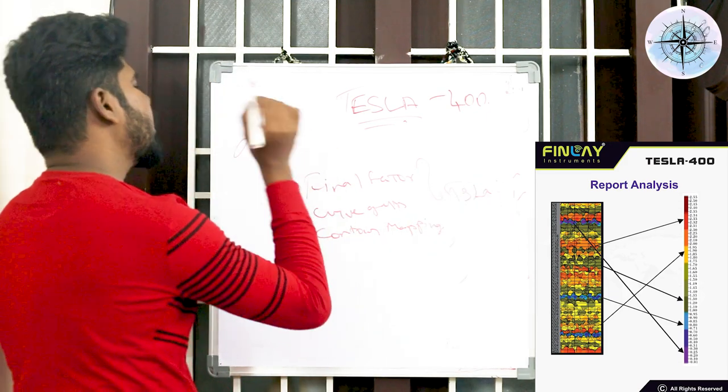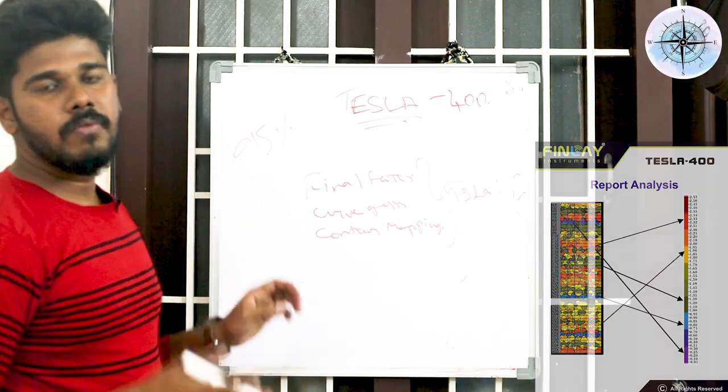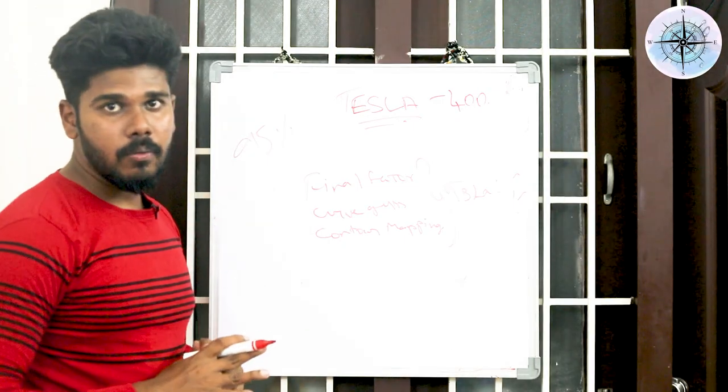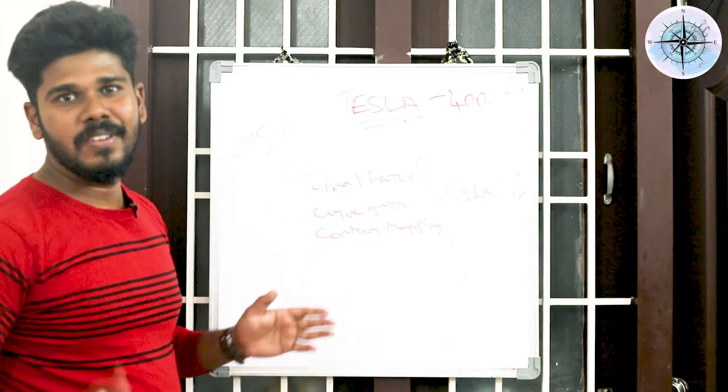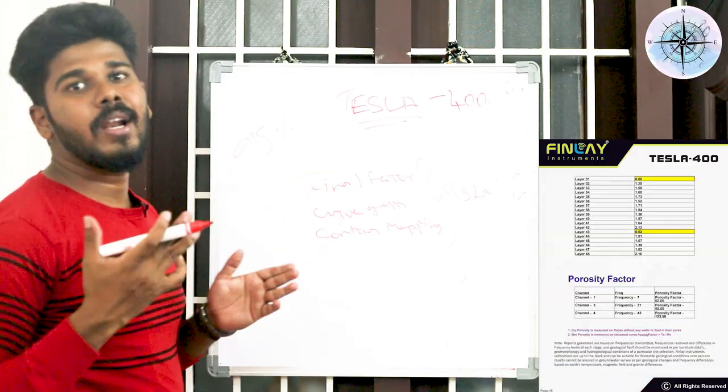So three stages of analysis is done in Tesla machine. That is the reason it is giving us 95 percent accuracy. Because layer mapping is the system which is used by geologists. Once you start understanding this mapping system, definitely you can call yourself a geologist.